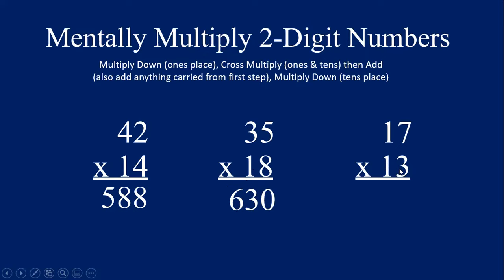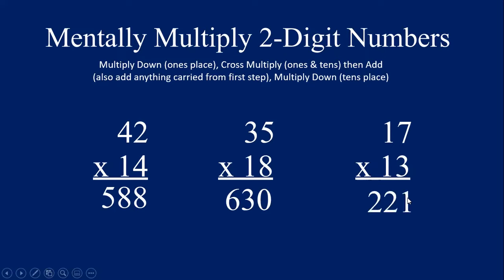Let's try 17 times 13. Multiply down: 7 times 3 is 21 — leave a 1, carry a 2. Cross multiply and add: 7 times 1 is 7, and 1 times 3 is 3 — so 7 plus 3 is 10. Add the 2 we carried: 10 plus 2 equals 12 — leave the 2, carry the 1. Multiply down: 1 times 1 is 1, add the 1 we carried — 1 plus 1 is 2. So the answer is 2, 2, 1 — 221 is the correct answer to 17 times 13.